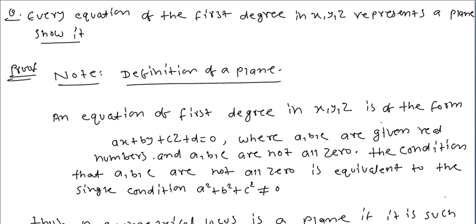First of all, we have to know what is the plane. I have written the definition of plane: an equation of first degree in x, y, z, each of the form ax plus by plus cz plus d equal to 0, that is in linear form, where a, b, c are given real numbers and a, b, c are not all zero — that is, out of a, b, c, at least one should not be zero.